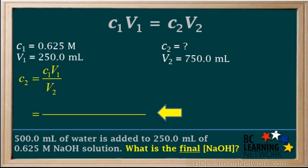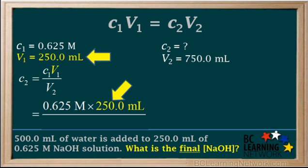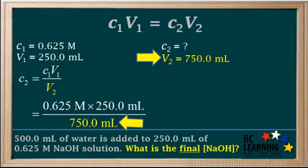We'll insert the given values in the equation. Our initial concentration, C1, is 0.625 molar. Our initial volume, V1, is 250 mL. Our final volume, V2, is 750 mL.